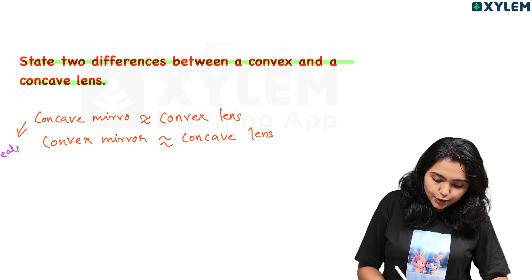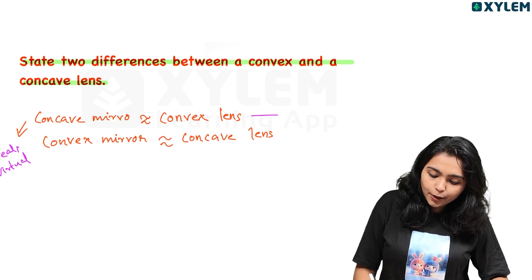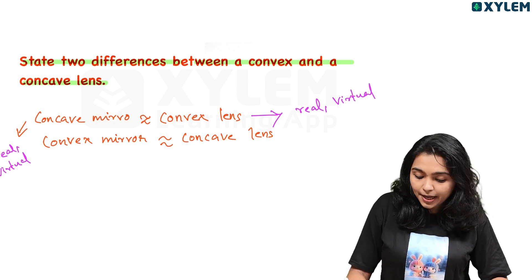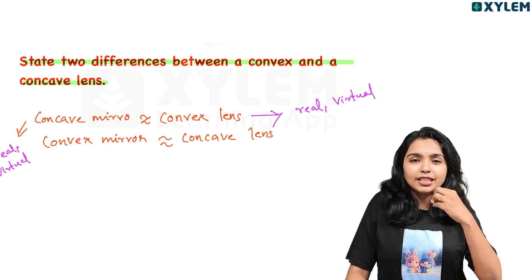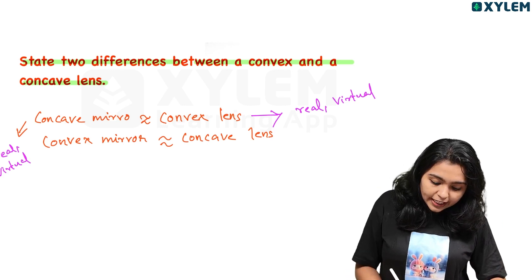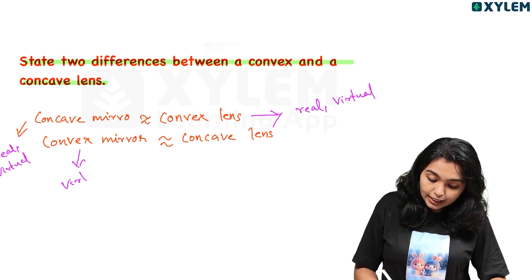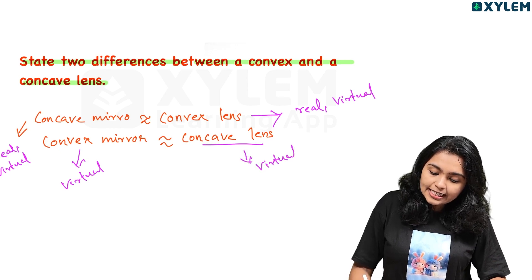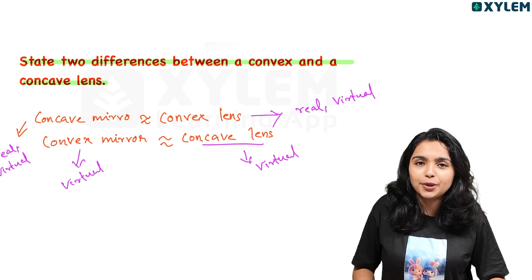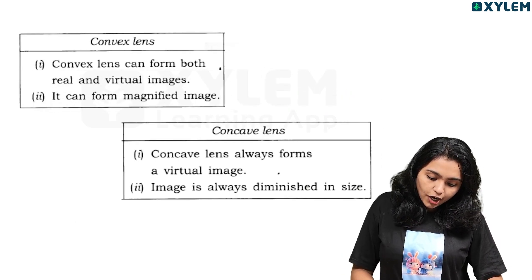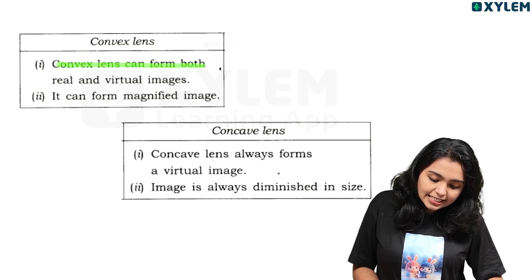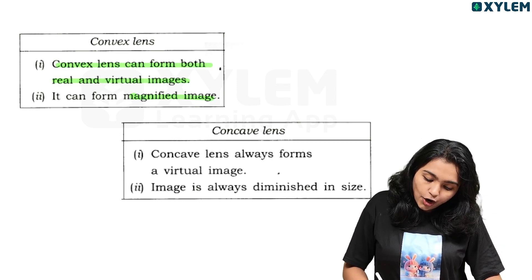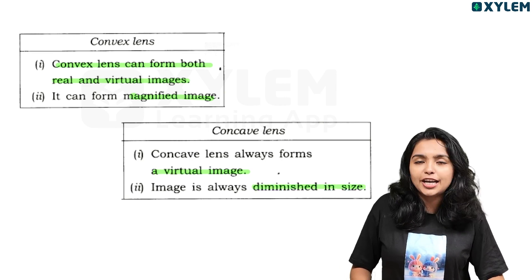We will call it real or virtual. You can call it the convex lens. Convex lens can form both real and virtual images. A magnified image is created. Concave lens always forms a virtual image, diminished in size.